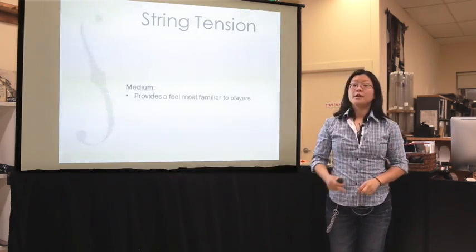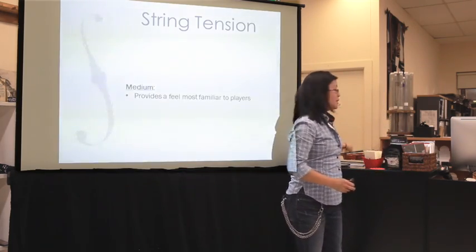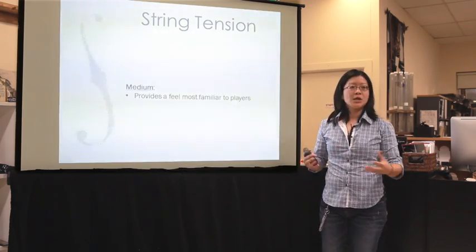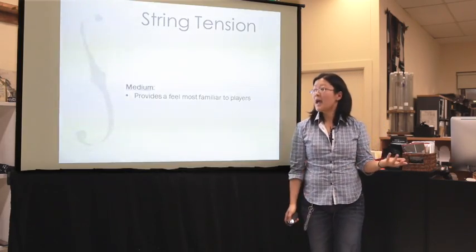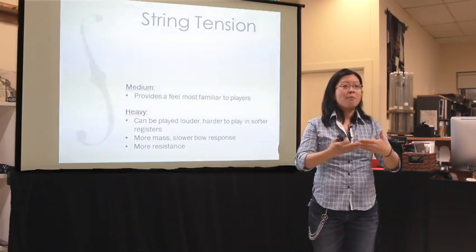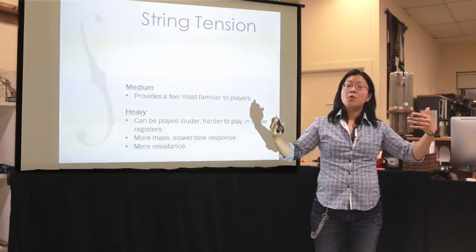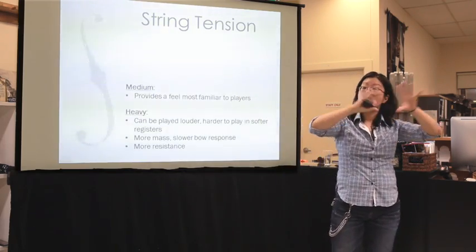Tension affects our playing experience holistically because it changes a few things. As string makers, we design medium tension to fit what we consider the majority of players. Unfortunately, there's no real standardization between tensions — you can't be guaranteed that one medium tension will equal another in feel or actual tension measurement. If we take a heavier tension version, because there's more mass on that string it moves more air, and by moving more air you're actually creating more volume and bigger projection.